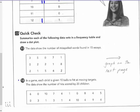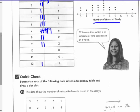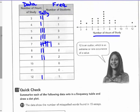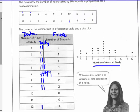In a game, each child is given 10 balls to hit at a moving target. The data shows the number of hits scored by 20 children. I like to make sure, which I didn't do here. I want to show you this. On my frequency table, when I'm done, I like to add up my frequency. So, to make sure that I got all 20, and that I didn't skip from my values up above here, from my data, that I didn't skip one of them. So, it says that there are 20 students.